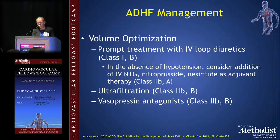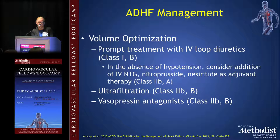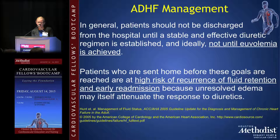The mainstay of treating acute decompensated heart failure is optimizing volume status. This includes prompt treatment with IV loop diuretics — a class one, level of evidence B recommendation. If the patient is not hypertensive, you can also consider additional treatment with IV nitro, nitroprusside, or nesiritide to help with diuresis. Class 2B recommendations include ultrafiltration and vasopressin antagonists such as the vaptans in the setting of significant hyponatremia. The overall goal is euvolemia achieved on a stable oral dose of medication before discharge, as premature discharge carries high risk of recurrence and readmission.